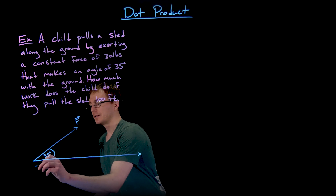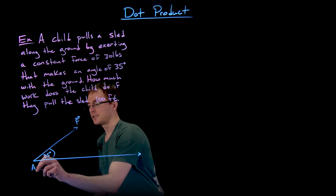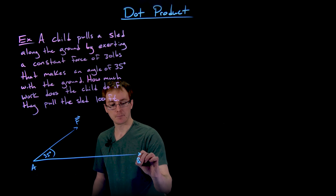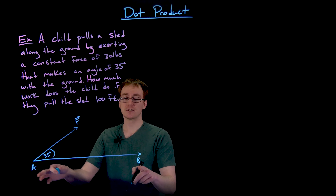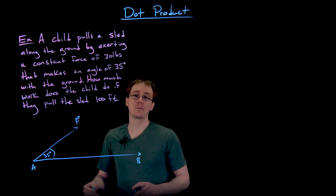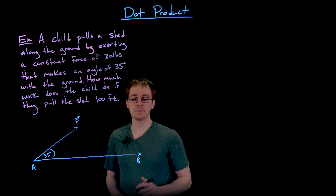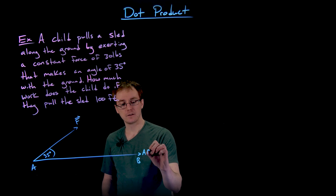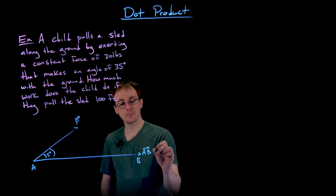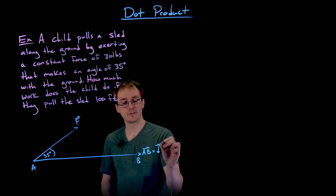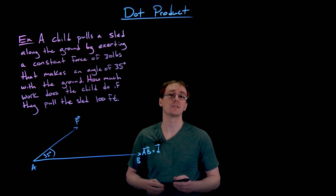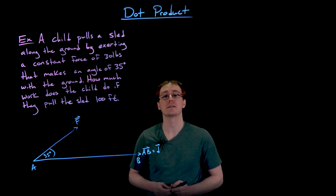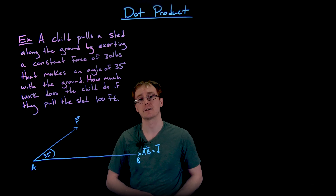If the sled starts at point A and ends at point B, then we can think of the distance between points A and B as a vector — the vector going from A to B, or to simplify, we can just write that as the vector D. Think of that as our distance or displacement vector.